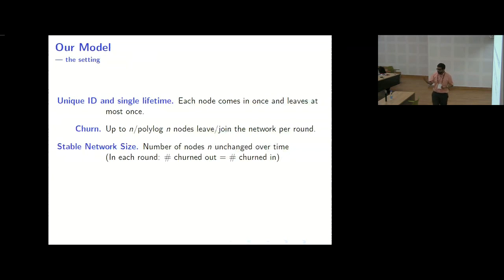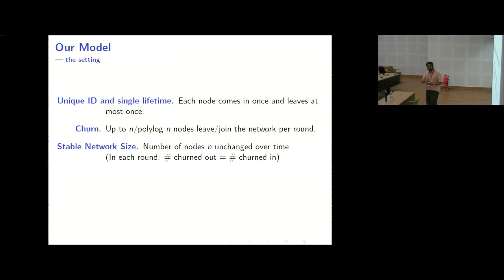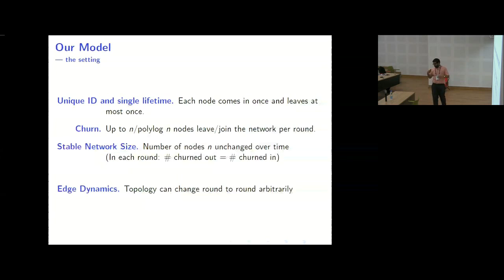Because there's churn, each node enters the network at some point and could potentially leave. The adversary must obey one key rule: churn cannot exceed n over poly-log(n) nodes per time step. At every time step, n over poly-log(n) nodes leave the network and a new set comes in — we assume stable network size, so nodes churned out equals nodes churned in. Peer-to-peer networks also keep changing their topology, so we assume edges also change.